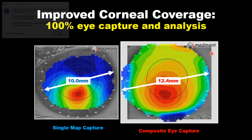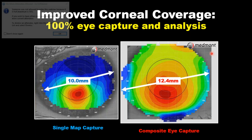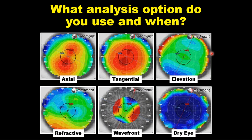If we can do a map covering the cornea completely to the limbus, we can predict the sagittal height at the level of the scleral lens — something no other topographer does. When we reach the limbus, the instrument is capable of predicting the sagittal height of a chord at the scleral level. This gives us a great advantage when adapting the scleral lens.